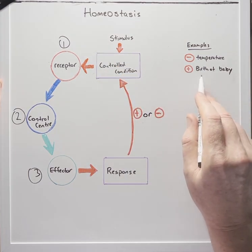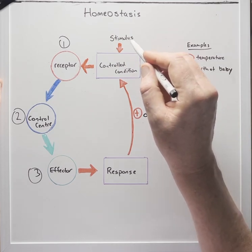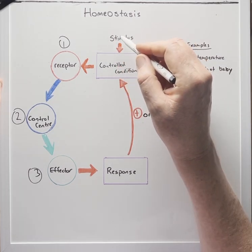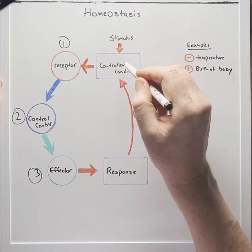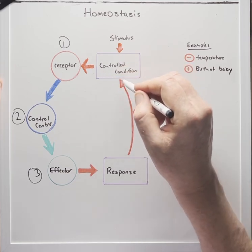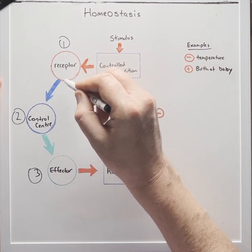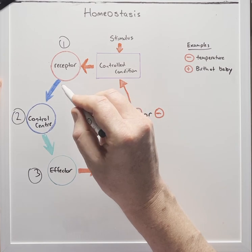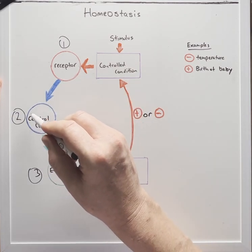An example of a positive feedback, the birth of the baby, the stimulus is the head of the baby pushing on the cervix. So the change in the control condition is stretching of the cervix. This is picked up by receptors in the cervix which sends a nerve signal to the hypothalamus.